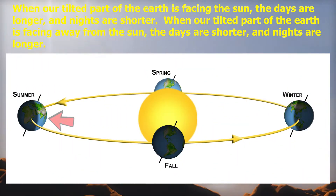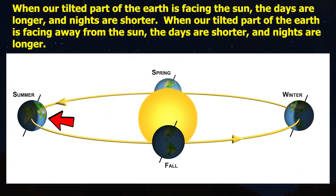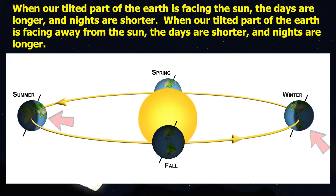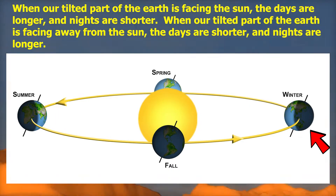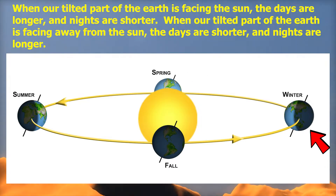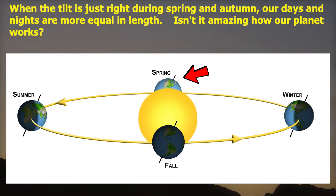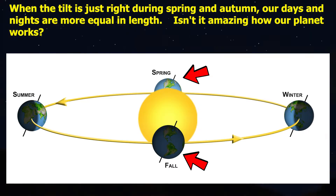When our tilted part of the earth is facing the sun, the days are longer and nights are shorter. When our tilted part of the earth is facing away from the sun, the days are shorter and nights are longer. When the tilt is just right during spring and autumn, our days and nights are more equal in length.